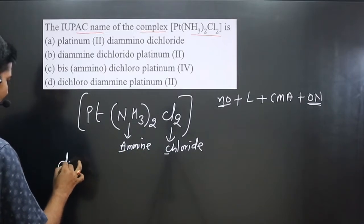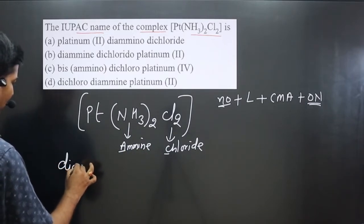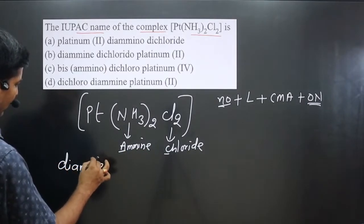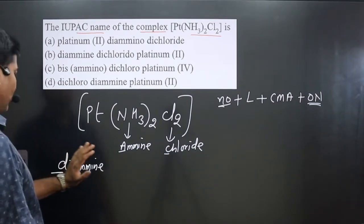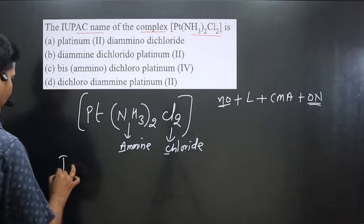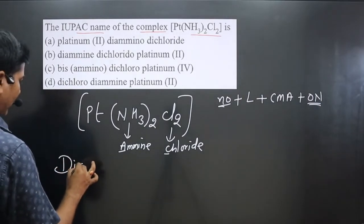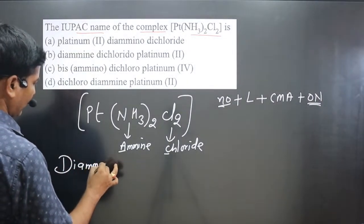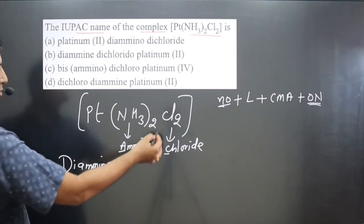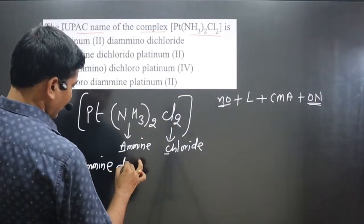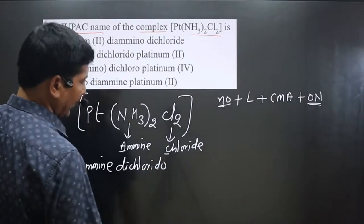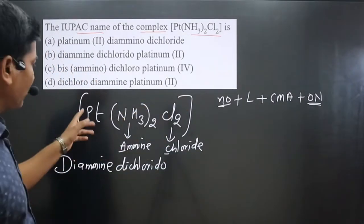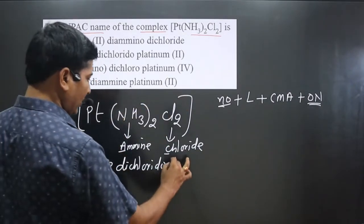First, we count the number of each ligand. There are two ammonia ligands, so we write 'diammine.' Then we have two chloride ligands, so we write 'dichlorido.' This gives us 'diammine dichlorido' so far.